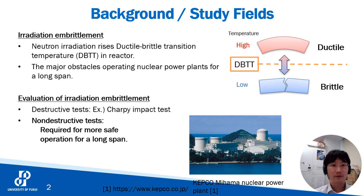First, I will explain irradiation embrittlement. Metallic materials in nuclear reactors are exposed to neutron beams emitted from nuclear fuels. In this case, a phenomenon called irradiation embrittlement occurs in metallic materials. Before going into this explanation, I would like to talk about the words ductile and brittle.